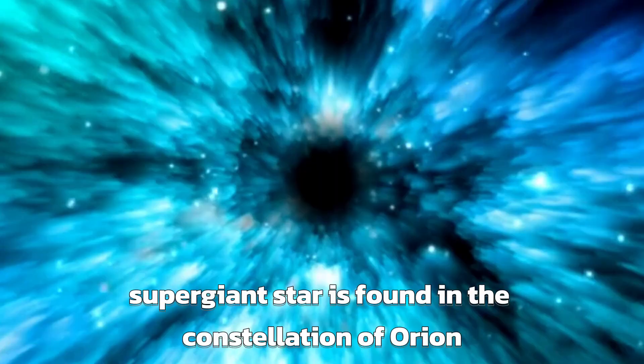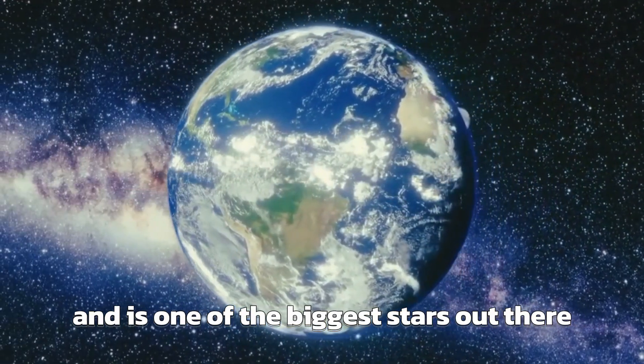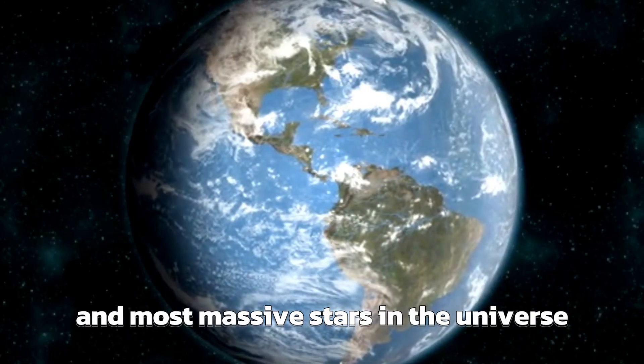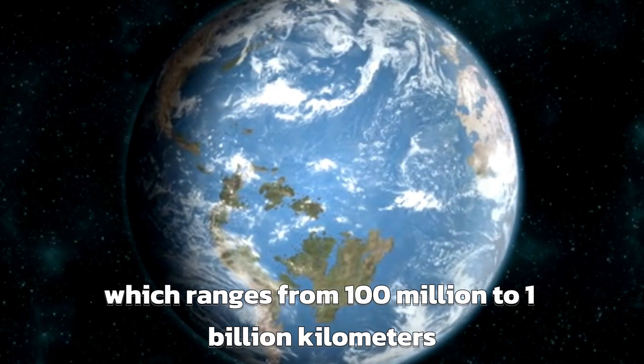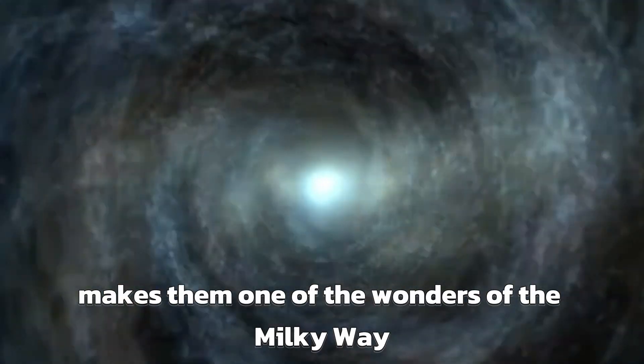The red supergiant star is found in the constellation of Orion and is one of the biggest stars out there. Red supergiant stars are some of the largest and most massive stars in the universe. Their diameter, which ranges from 100 million to 1 billion kilometers, makes them one of the wonders of the Milky Way.